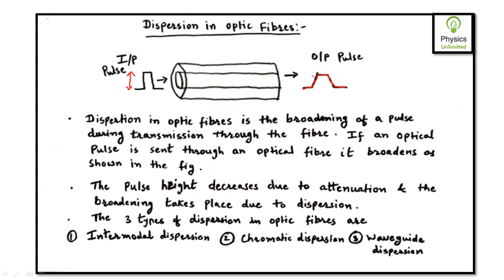The pulse height of the output pulse is decreased as compared to the input pulse, and the width of the output pulse is also increased. The reduction in height of the output pulse is due to attenuation, which we discussed earlier — attenuation is nothing but power loss — while the broadening of the pulse takes place due to the phenomenon known as dispersion. There are three types of dispersion in optic fibers.